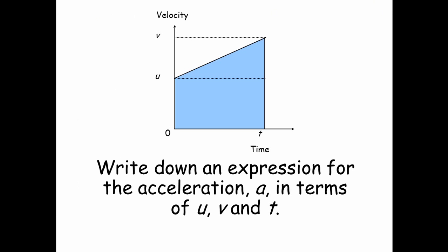Now, the first thing we need to do is write down an expression for the acceleration A in terms of u, v, and T. And that is that A equals v minus u over T. So that's the change in velocity, so the final velocity minus the initial velocity, divided by the time taken.